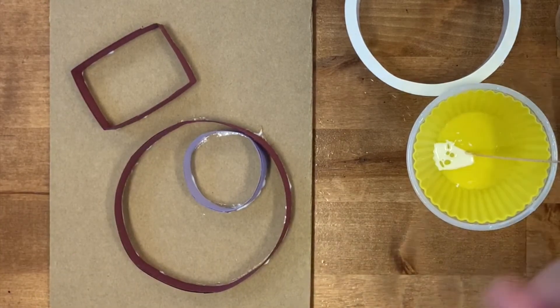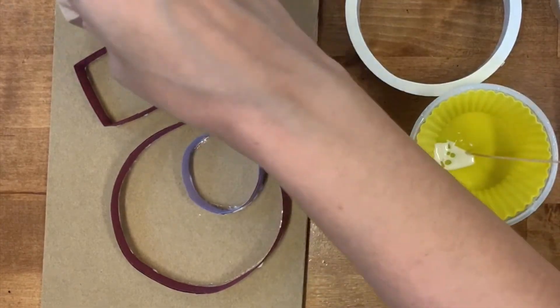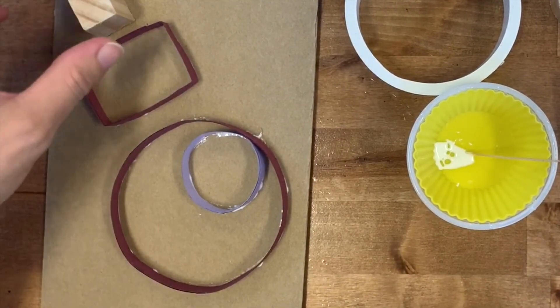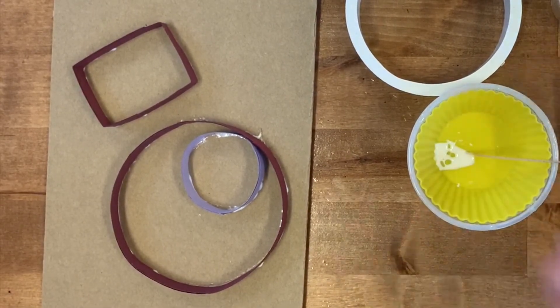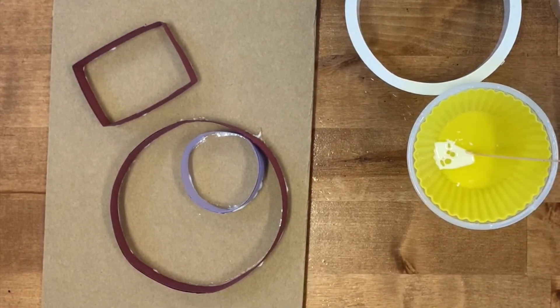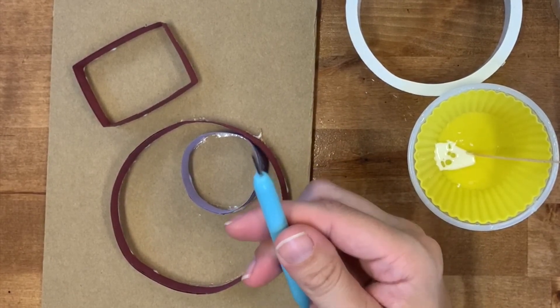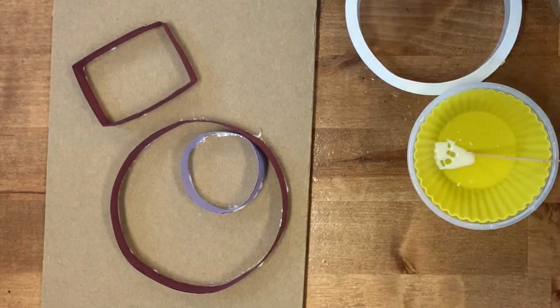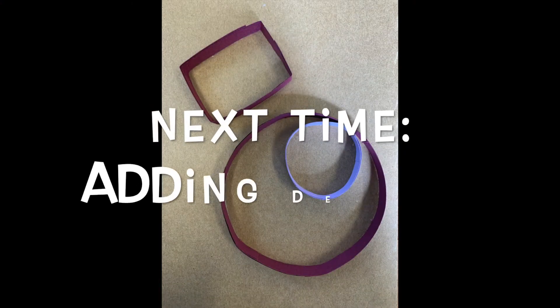You can continue adding to your robot using the template shapes that you have. Next time, we're going to talk about how to use the quilling tool to make circles and how to fold a piece of paper into a zigzag to make a small square.